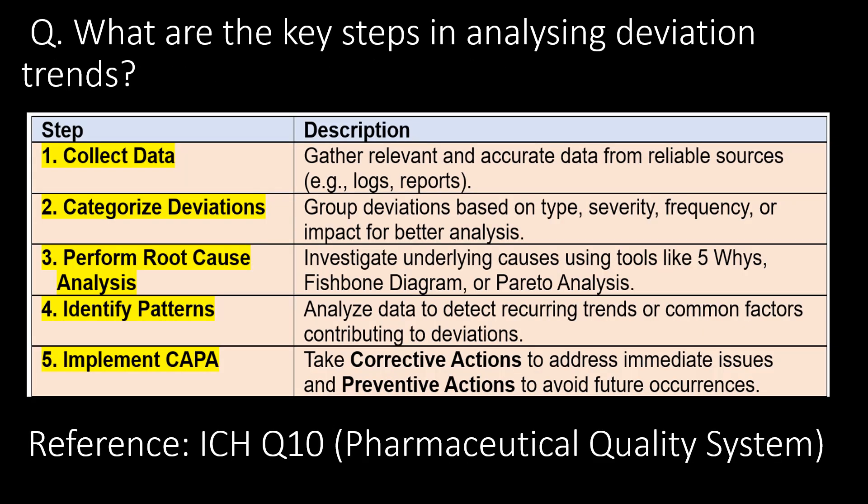Very important question: what are the key steps in analyzing a deviation trend? You can refer to the following five steps. Step one — collect data: gather relevant and accurate data from reliable sources, for example logs or reports. Step two — categorize deviations: group deviations based on type, severity, frequency, or impact for better analysis.